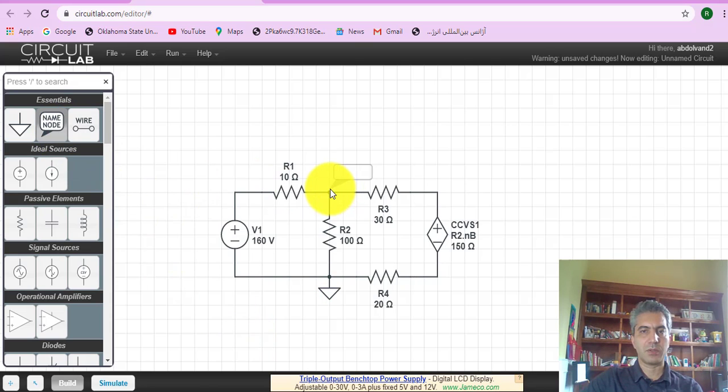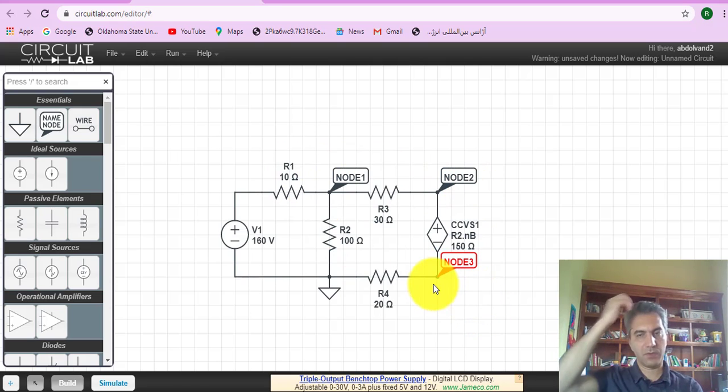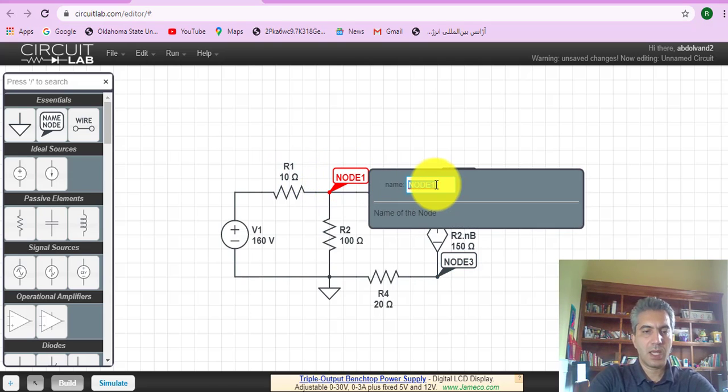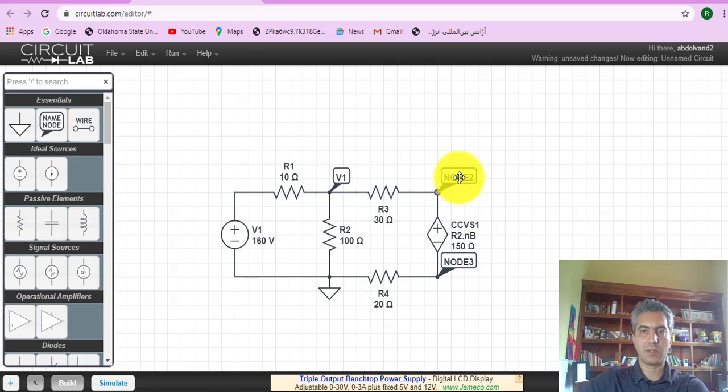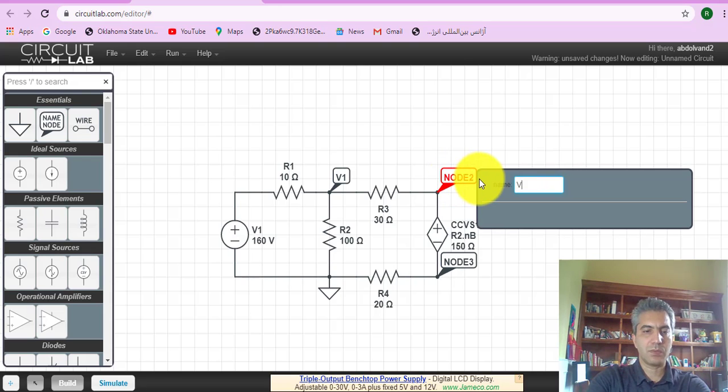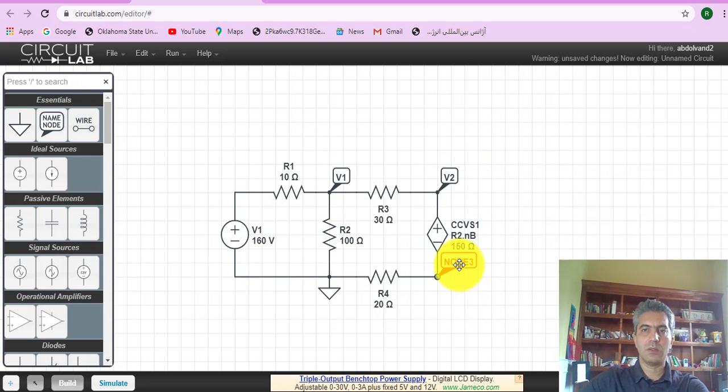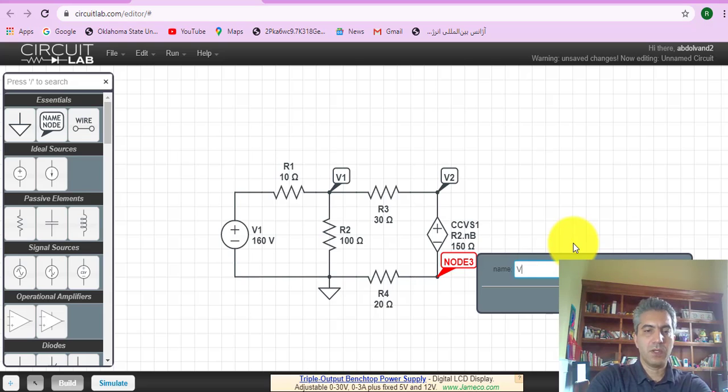Now that I did this, I actually am going to define nodes as well. This was node one, node two, node three, and you can choose any name like v1, v2, v3 if you want to. Let's actually do that so that corresponds to what we had in our analysis. So that's v1, and call this one v2, and call this one v3.